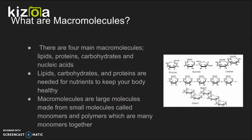Macromolecules are large molecules made from monomers and polymers. Polymers are chains of monomers, and monomers are the basic unit of a macromolecule. There are four macromolecules: